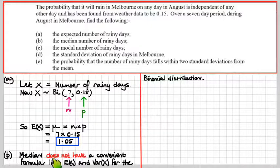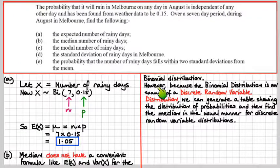Now the median. This is a knotty one. The median does not have a convenient formula like the expected value of X or the variance of X for the binomial distribution. However, because the binomial distribution is an example of a discrete random variable distribution, we can generate a table showing the distribution of probabilities, and then we can find the median in the usual manner for discrete random variable distributions.